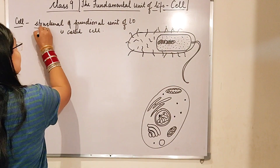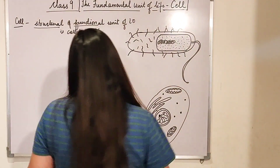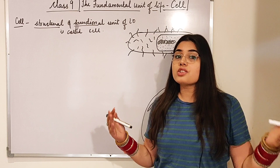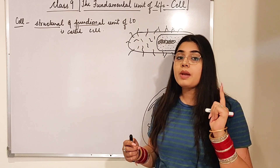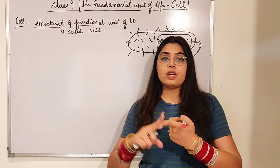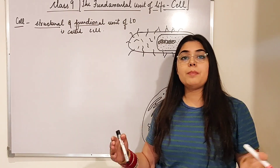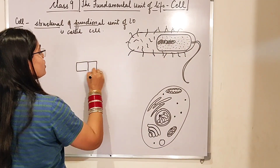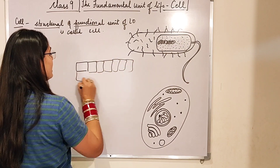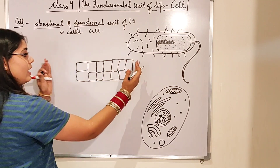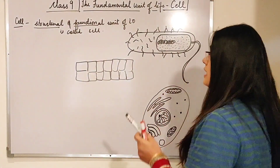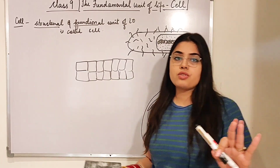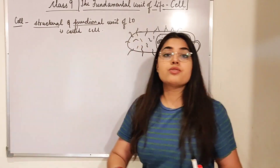What is the meaning of structural and functional unit? Structural means it gives a structure and a shape. The cell is responsible for the shape of your body — it plays a structural role. Multiple cells come together and lead to the formation of a structure. Without cells coming together, no structure is possible. That is why cell is known as the structural unit.